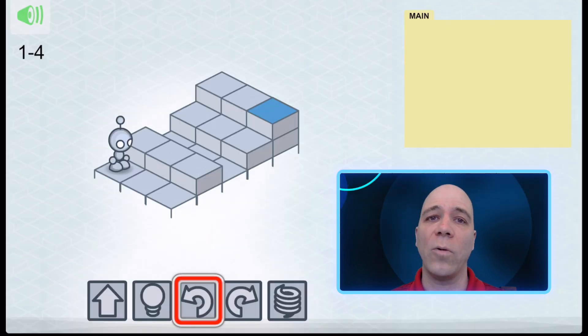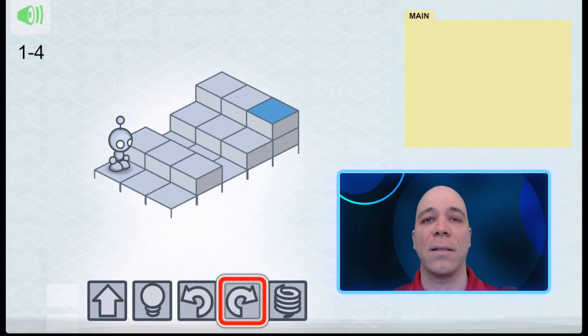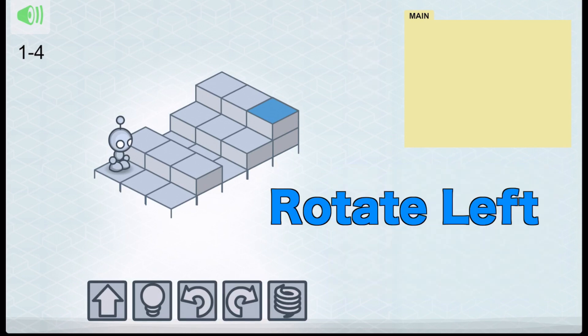The next two commands are the rotate left and rotate right commands. These commands keep Lightbot on the same square but get it to face a different direction like this.